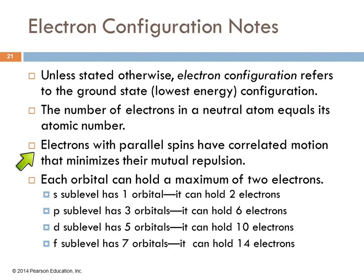Electrons with parallel spins have correlated motion that minimizes their mutual repulsion. Each orbital can hold a maximum of two electrons.